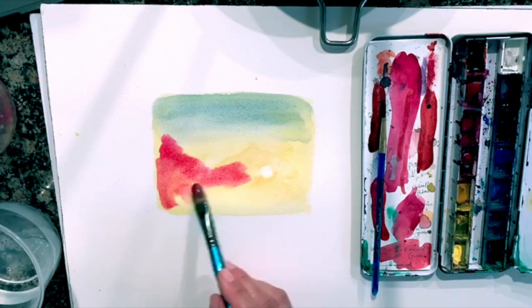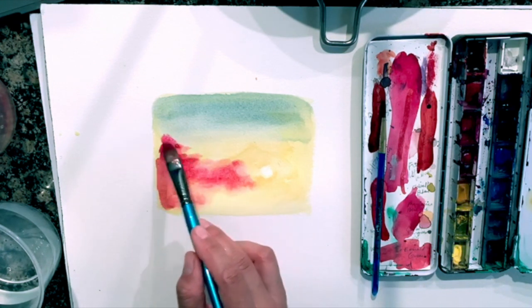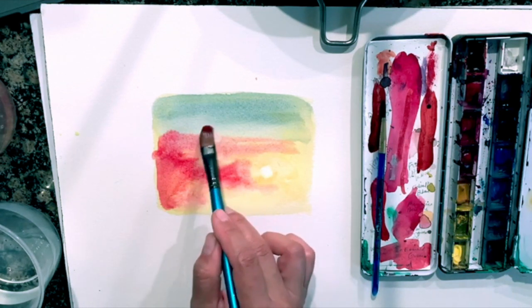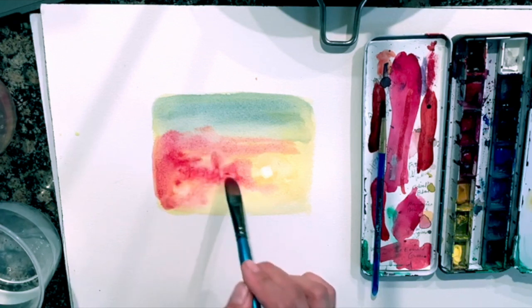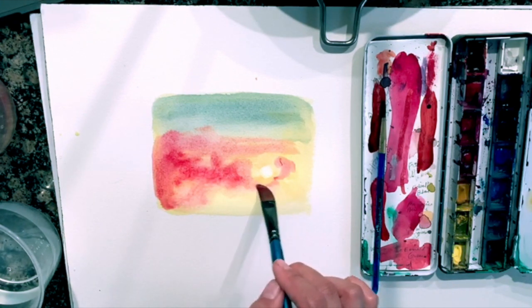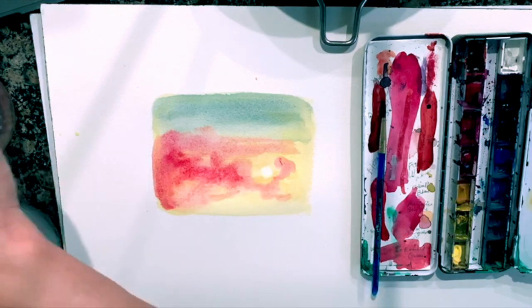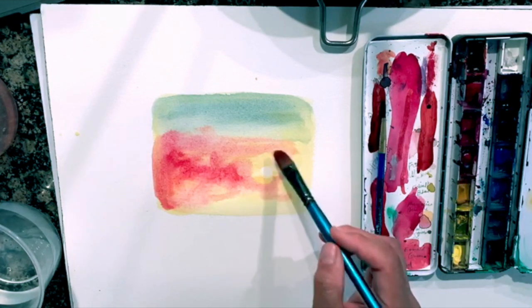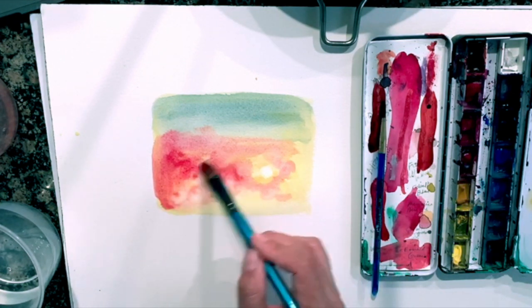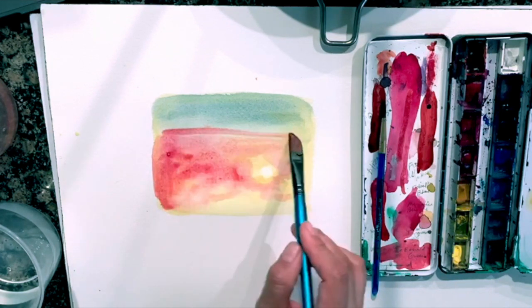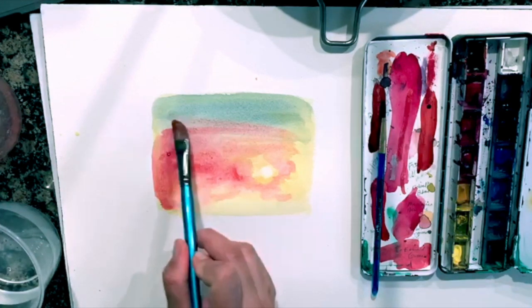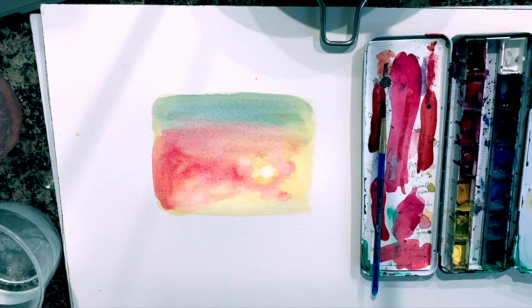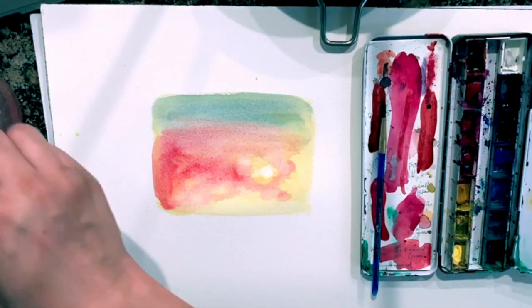And if you put too much color down, you could clean your brush and tap it on the paper towel and then pick up the color with the clean brush. If you think you put too much color, so just play with it. Don't worry. If you put too much color altogether, you could take your paper towel and just dab everything off of there and start over.